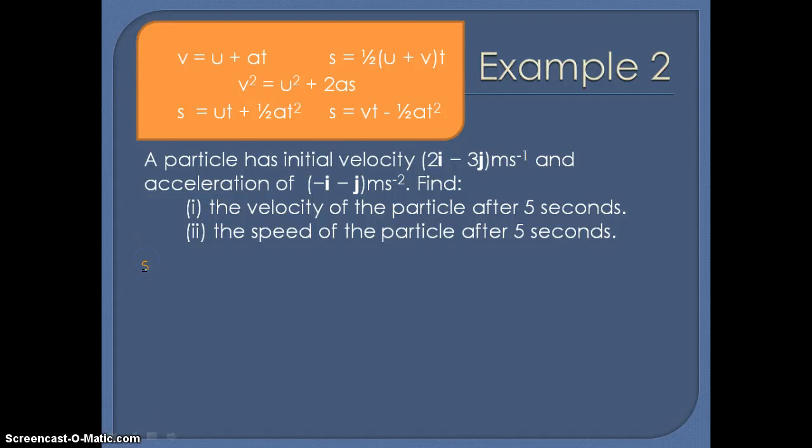So if we list again what we know. We've been given initial velocity as 2i minus 3j. We've been given acceleration of minus i minus j. We've been given the time of 5 seconds. And we've been asked to calculate the velocity. So we need an equation with V, U, A and T. So we can choose V equals U plus AT.